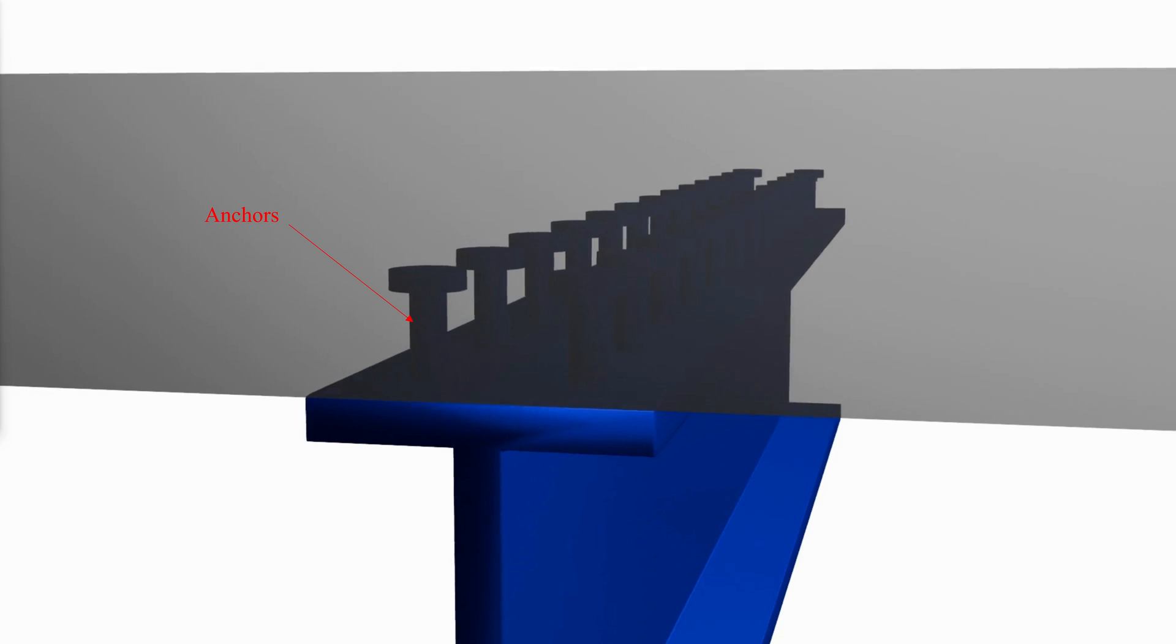These devices, which can be steel-headed studs or short lengths of small steel channel shapes, are welded to the top flange of the steel beam at prescribed intervals and provide the connection mechanically through anchorage in the hardened concrete.